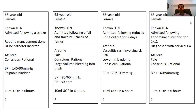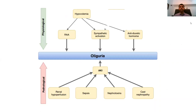Oliguria can be physiological or pathological. By physiological, the problem is not actually in the kidney — somewhere else in the body, the body tries to adapt physiologically, resulting in oliguria. The commonest such cause is hypovolemia. On the other hand, there are pathological problems in the kidney or surrounding structures which also lead to oliguria.